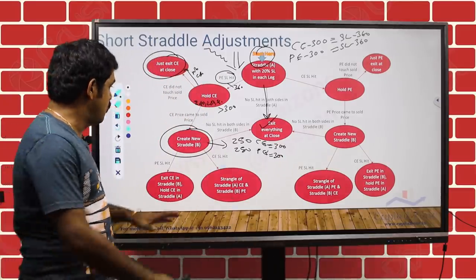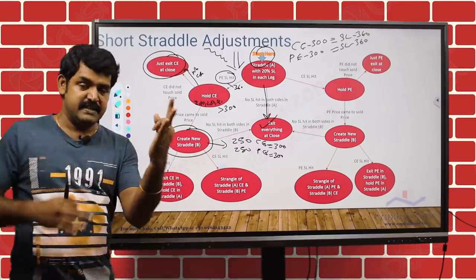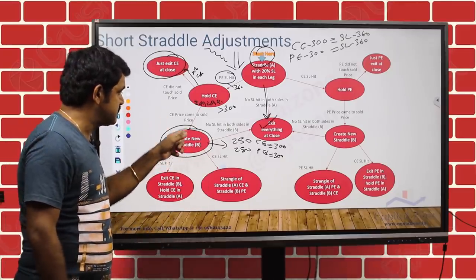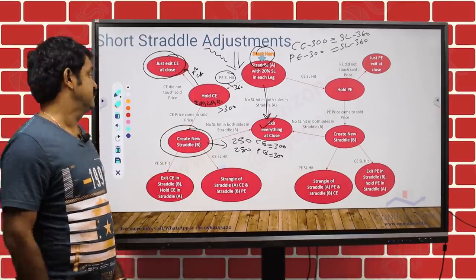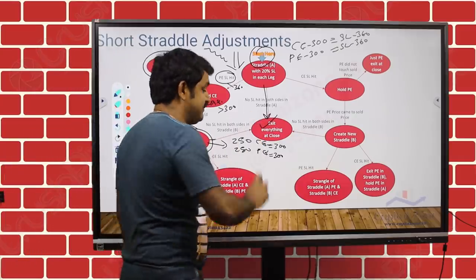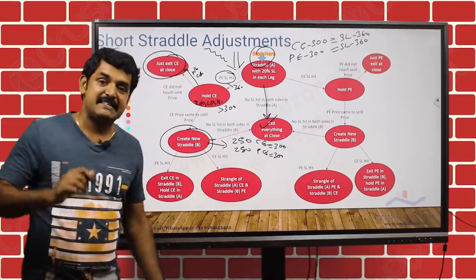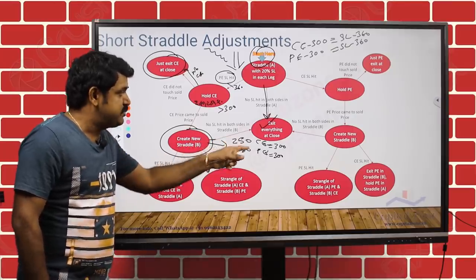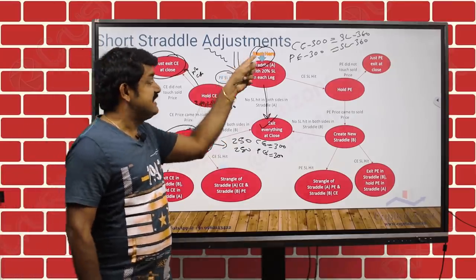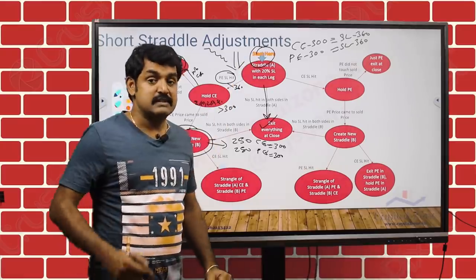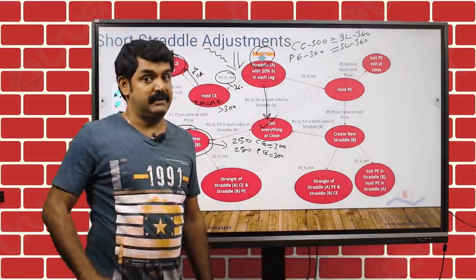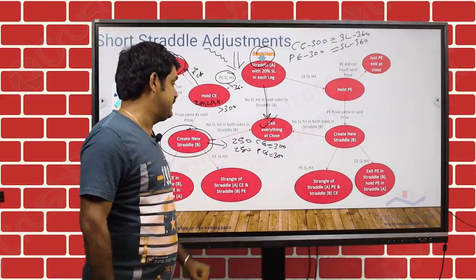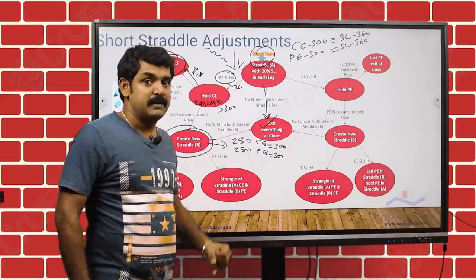Now there are three cases. Case one: no stop loss is hit for Straddle B — then exit everything. When I say exit everything, that means Straddle B call, Straddle B put, and Straddle A call — because Straddle A call is still pending, the stop loss was not hit. So three positions you are going to exit.